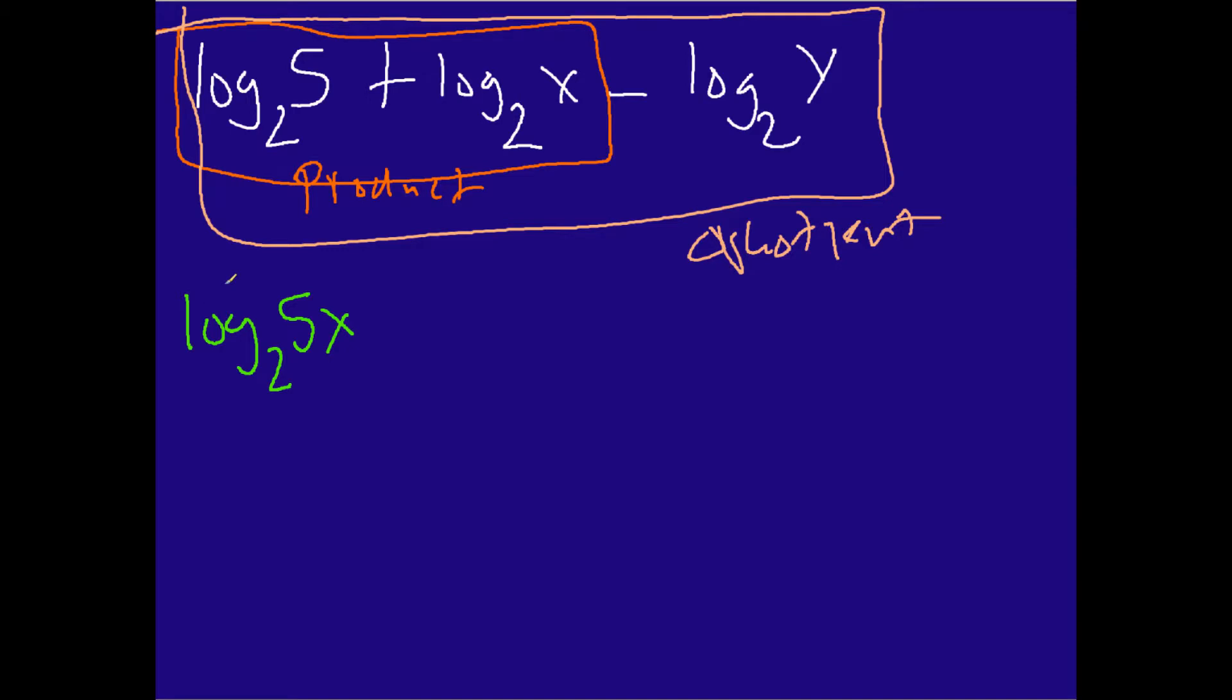So I have log base 2 of 5x minus log base 2 of y. Now, this time, instead of having an addition sign between the two terms, I now have a subtraction sign. And that is why we now use the quotient property. So when we do that, we get log base 2 of 5x over y, like so. And this is the answer.